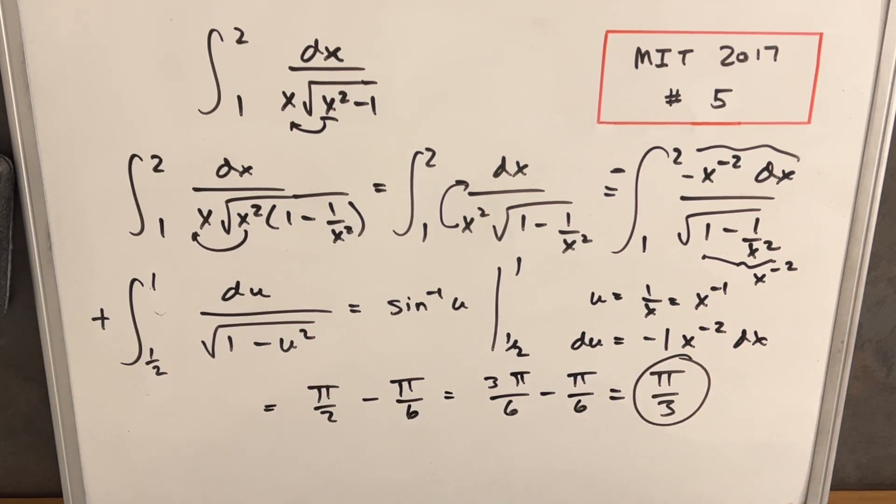So that's MIT Integration B 2017, problem number five. Thank you for watching. Please like and subscribe. Have a good day.